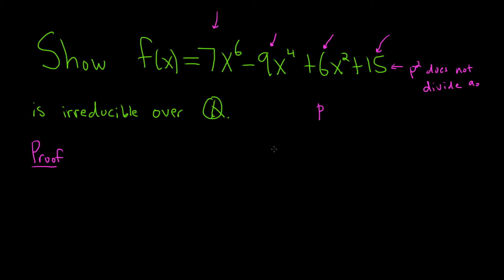Then it's going to be irreducible over the rational numbers. Again, if you can find a prime that divides this one, this one, and this one, but it doesn't divide the leading coefficient, and as well as this condition here, p squared does not divide the constant term, then it's irreducible. It's kind of an interesting condition, it's a lot, okay?